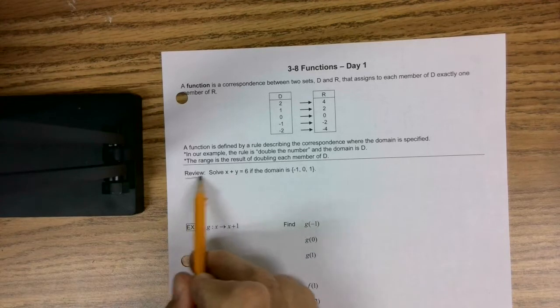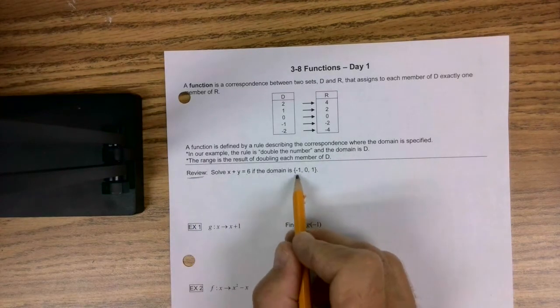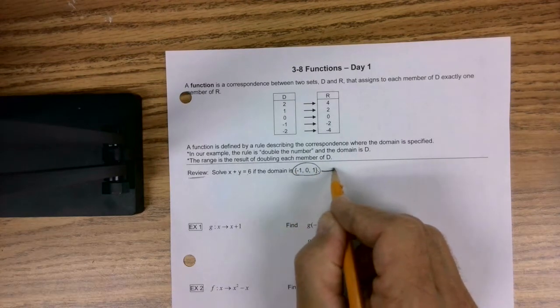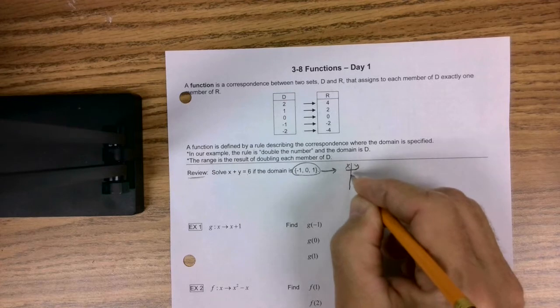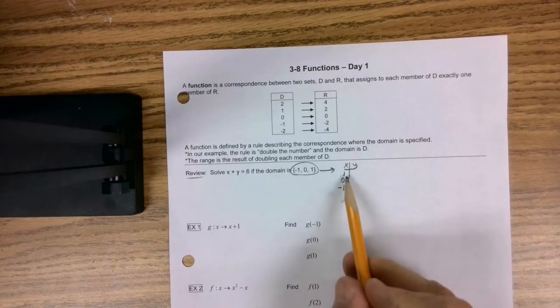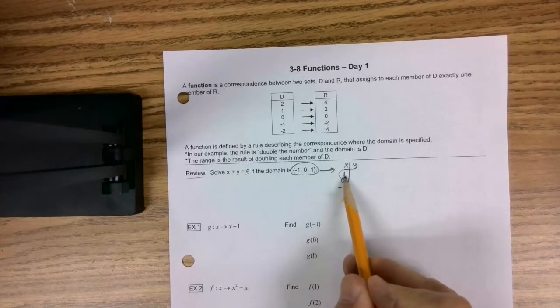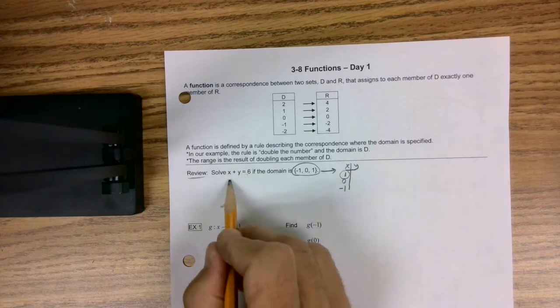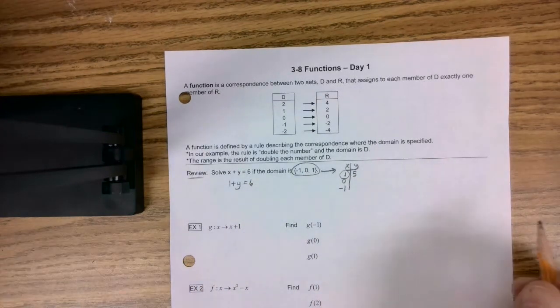So here's your review. Solve x plus y equals 6 if the domain... Alright, what is that really saying? Well, it's saying think of it like this: 1, 0, negative 1. And plug each one in one at a time. So I'd say, alright, let's let x be 1. So I'm going to put it right there. 1 plus y equals 6.